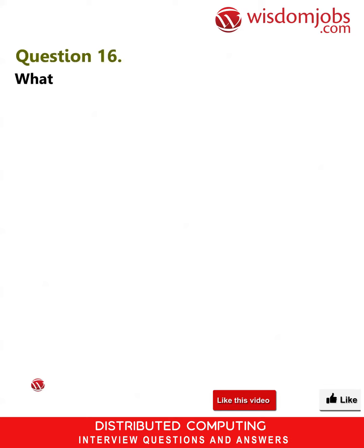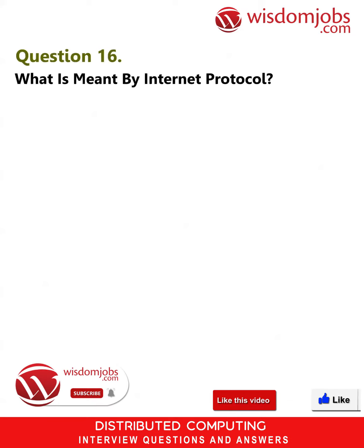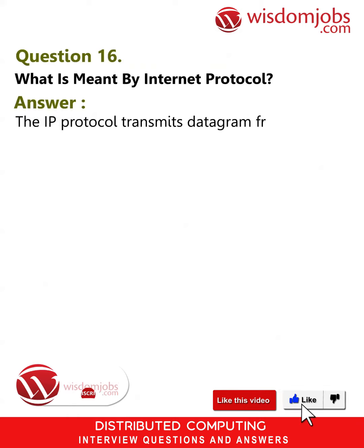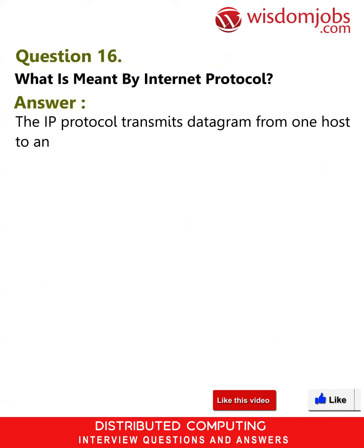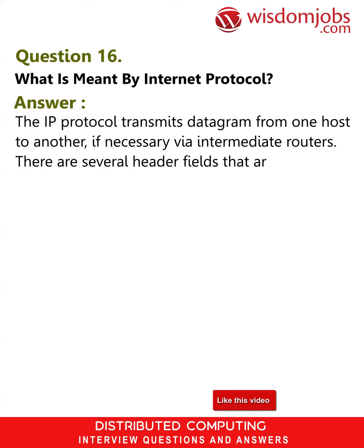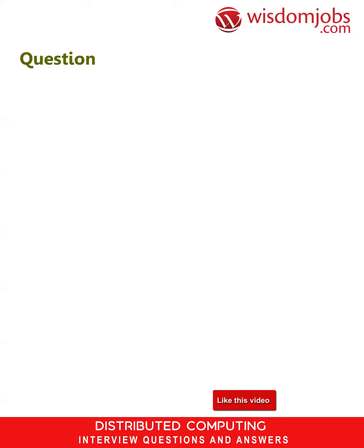Question 16: What is meant by Internet Protocol? Answer: The IP protocol transmits datagrams from one host to another, if necessary via intermediate routers. There are several header fields that are used by the transmission and routing algorithms.